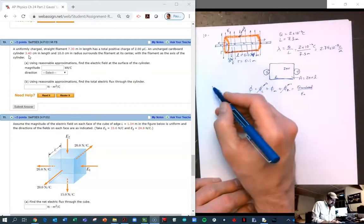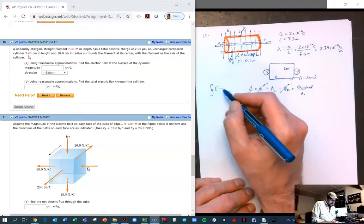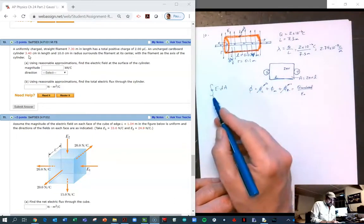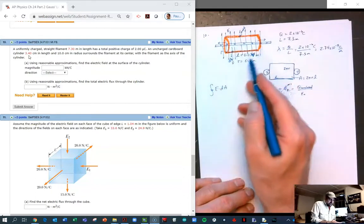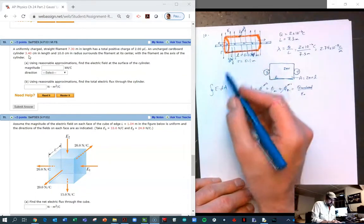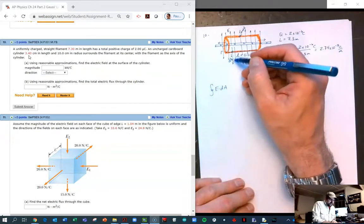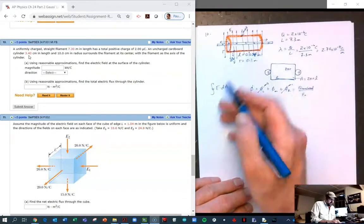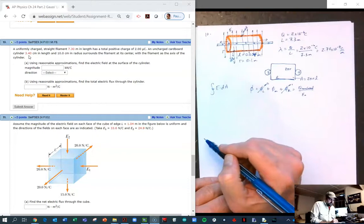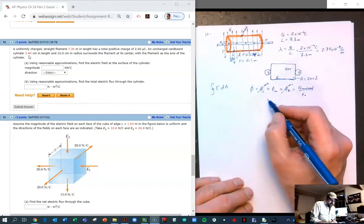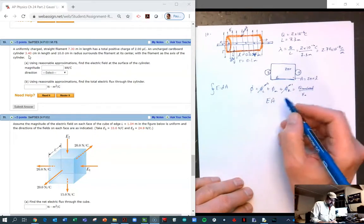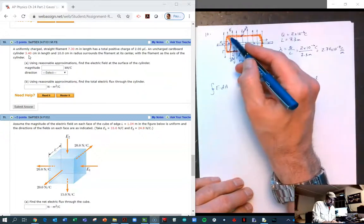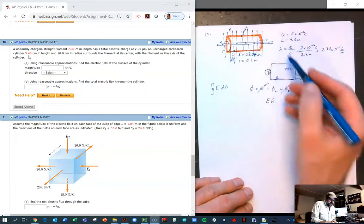The only flux that survives is this middle flux, and we've seen it time and time again: the electric field is constant everywhere along that middle part so we can pull it out of the integral. Because E and dA are parallel to each other, the dot product becomes one, so we end up with just simply E times the area. The only area that survives is the area of this middle wrapper.